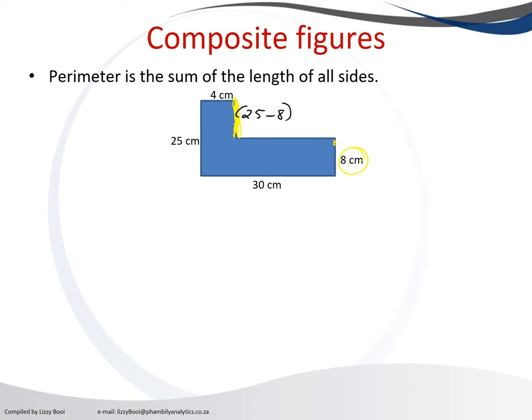This part we can calculate using the 30 and the 4, because the difference between 30 and 4 will give us the red part. So this red part will be 30 minus 4. So let's calculate the composite perimeter.